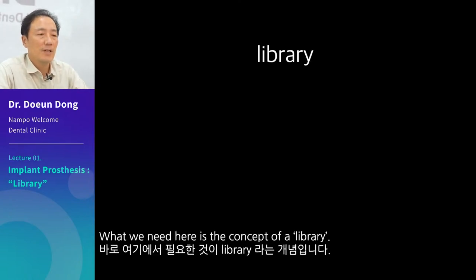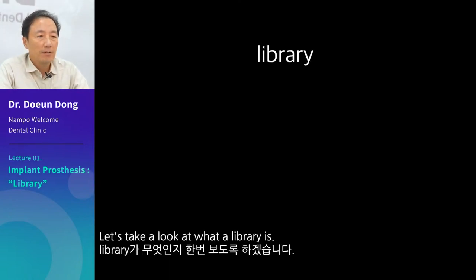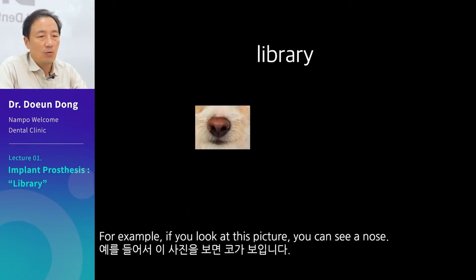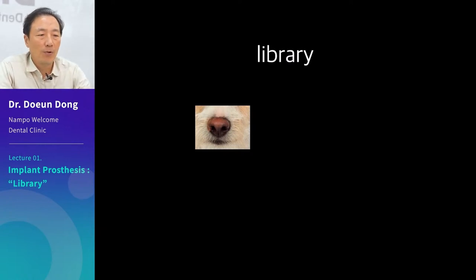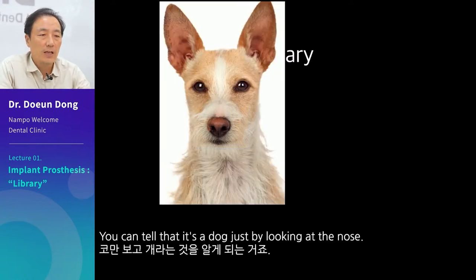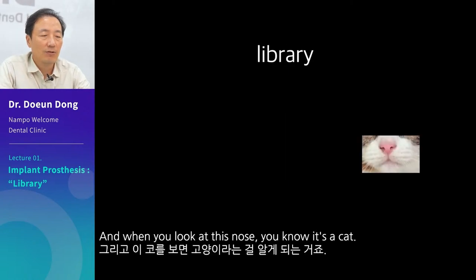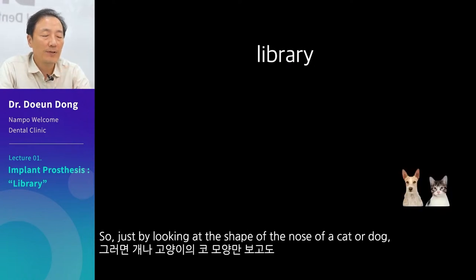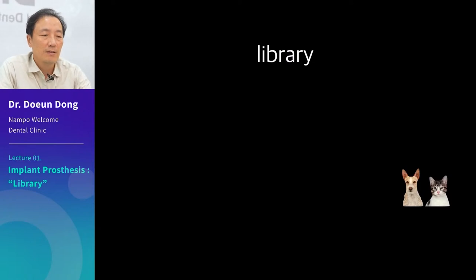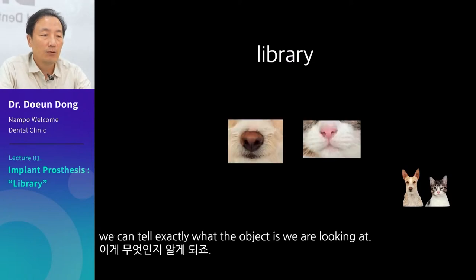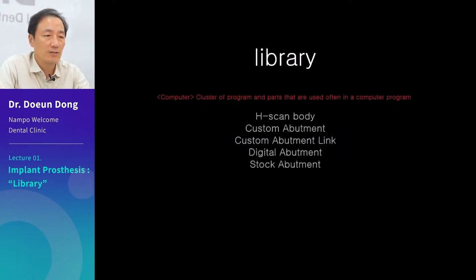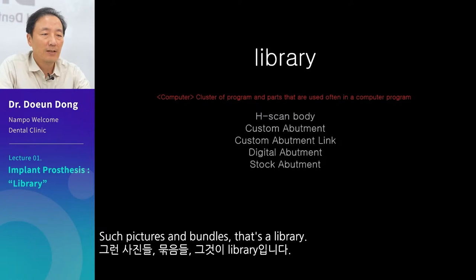What we need here is the concept of a library. For example, if you look at a picture, you can see a nose. You can tell that it's a dog just by looking at the nose, and when you look at another nose, you know it's a cat. We have a library of cats and dogs, so just by looking at the shape of the nose, we can tell exactly what the object is. Such pictures and bundles — that's a library.